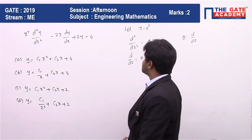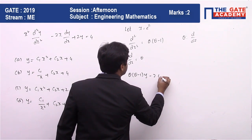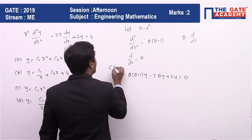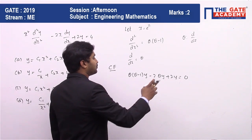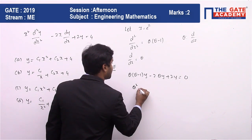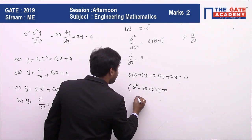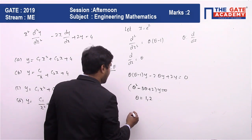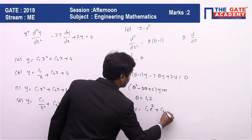So we can write the equation as theta(theta minus 1)y minus 2·theta·y plus 2y equals 0. For the complementary function, we take the right-hand side equal to 0. This gives us theta² minus 3·theta plus 2 multiplied by y equals 0, for which you get the values of theta equal to 1 and 2. So the complementary function is c1·e^z plus c2·e^(2z).